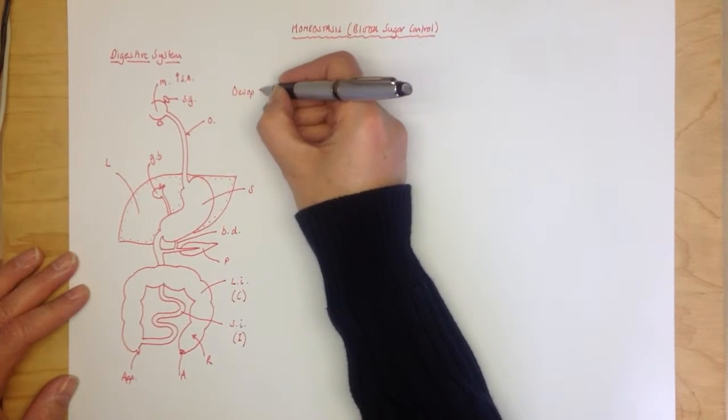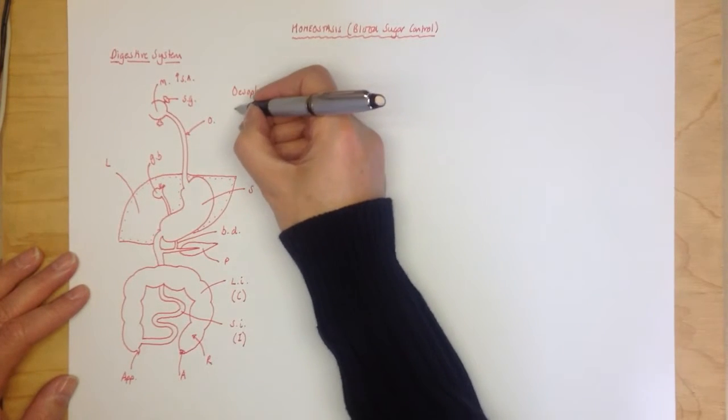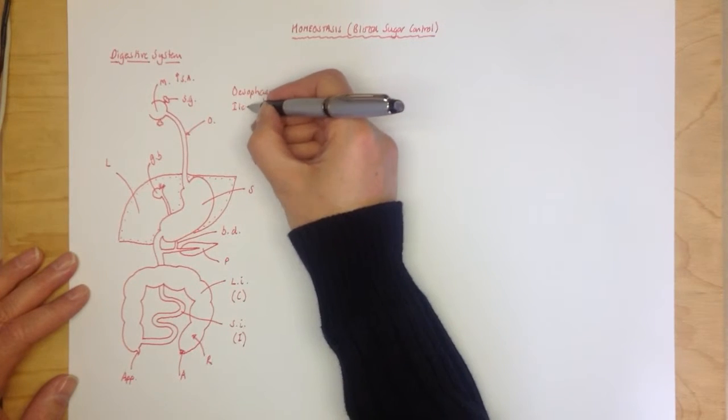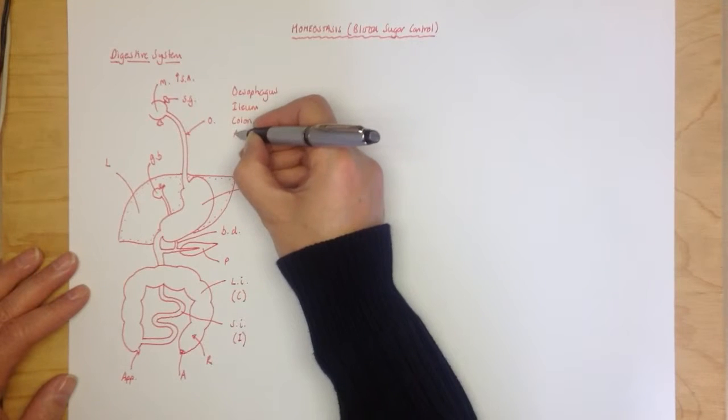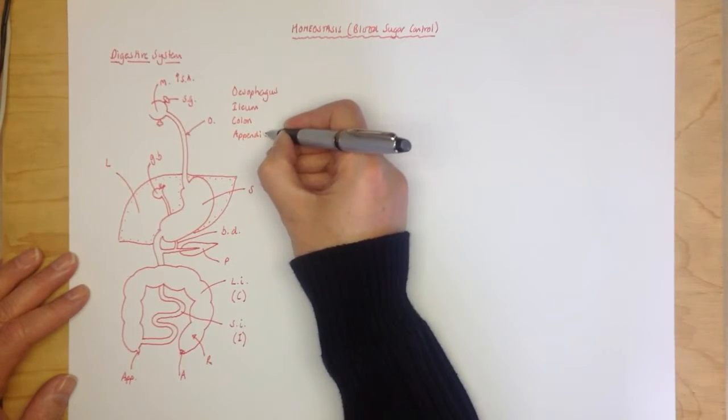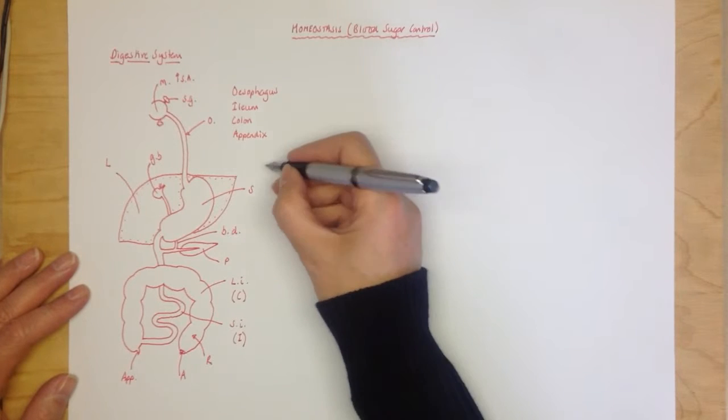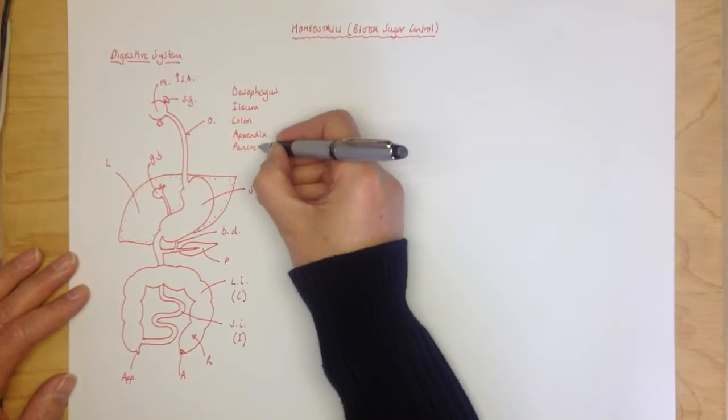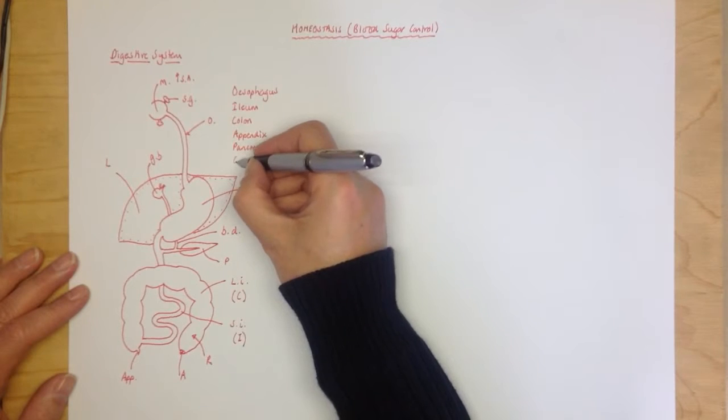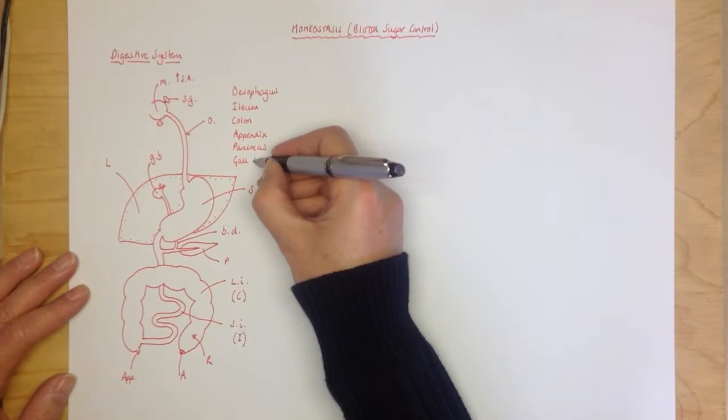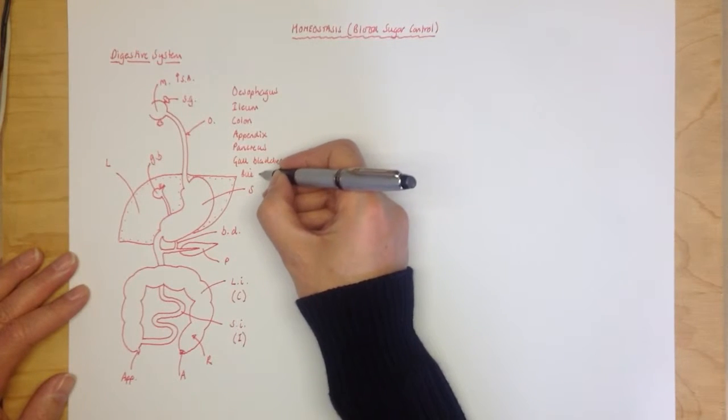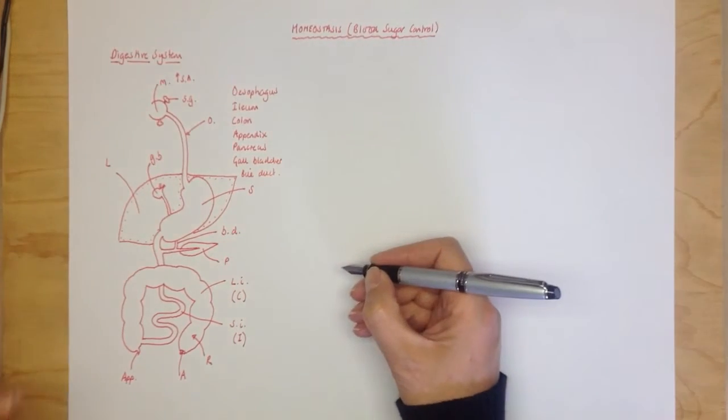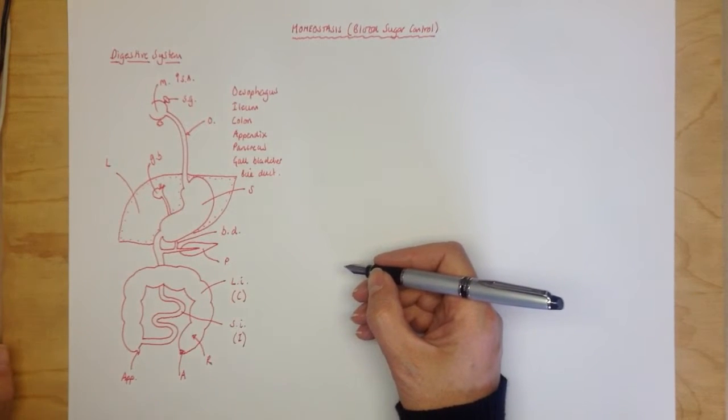Esophagus. Ileum, which is the other name for the small intestine. Colon. Appendix - double P for appendix. Pancreas. Gallbladder. And bile duct. You need to be able to draw and label.